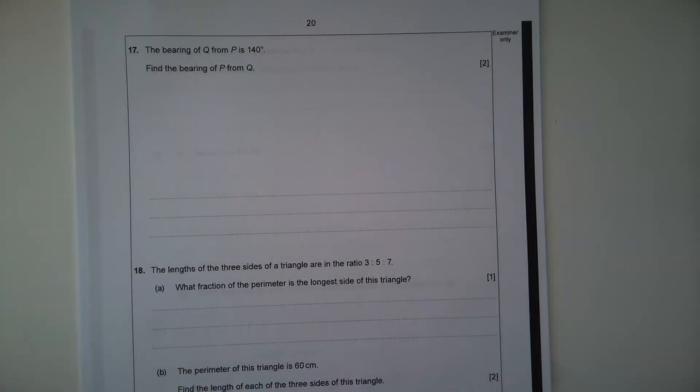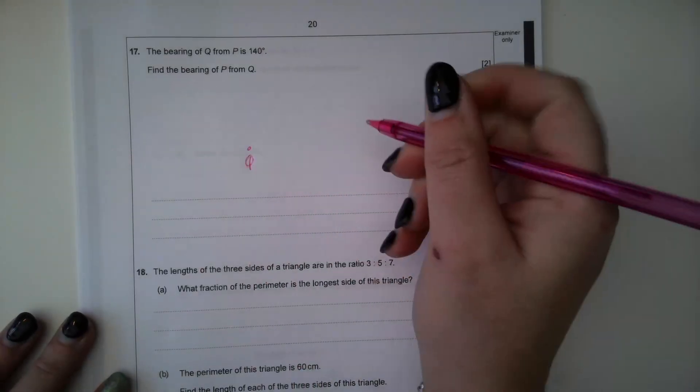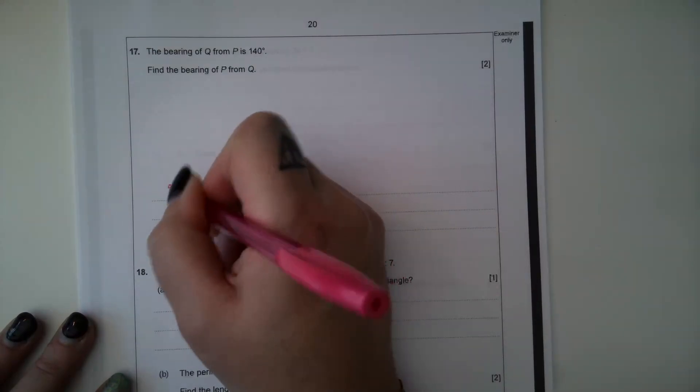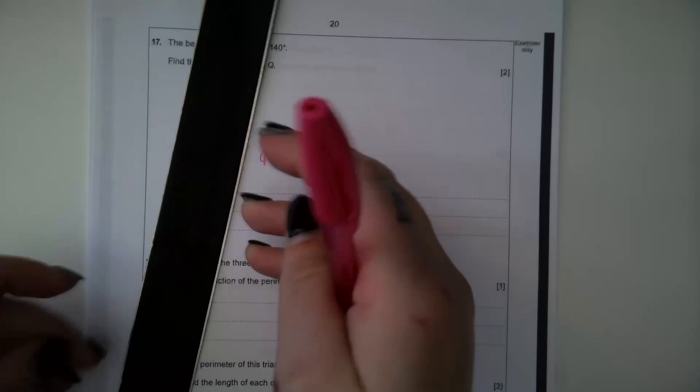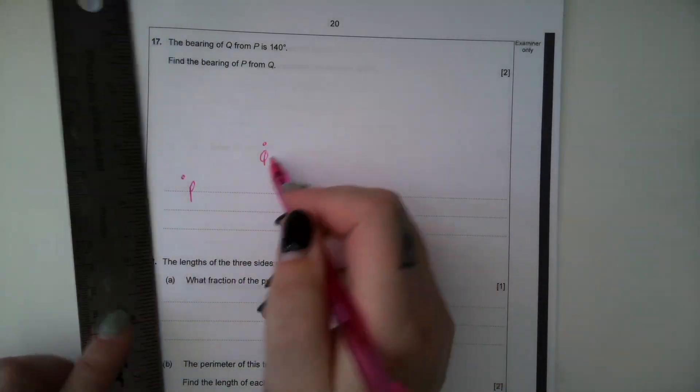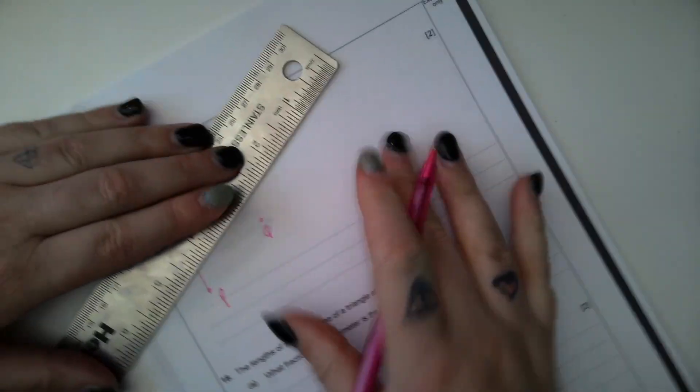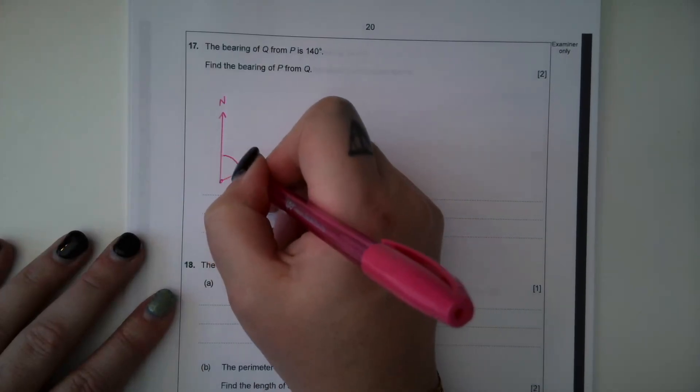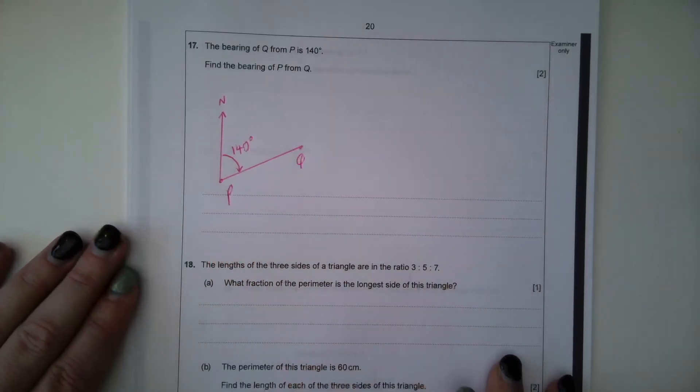Question 17, the bearing of Q from P is 140 degrees. So if we've got Q and we've got P. So if we're taking the bearing of Q from P, so we're starting at P, so we draw our north line, we're going to Q. So what it's telling us here is this angle, this bearing is 140 degrees. It wants us to find the bearing of P from Q.